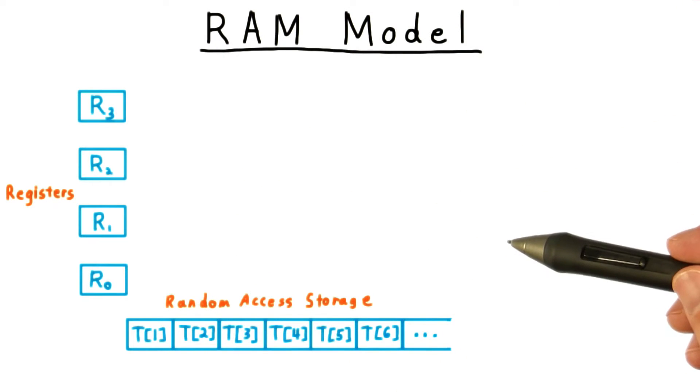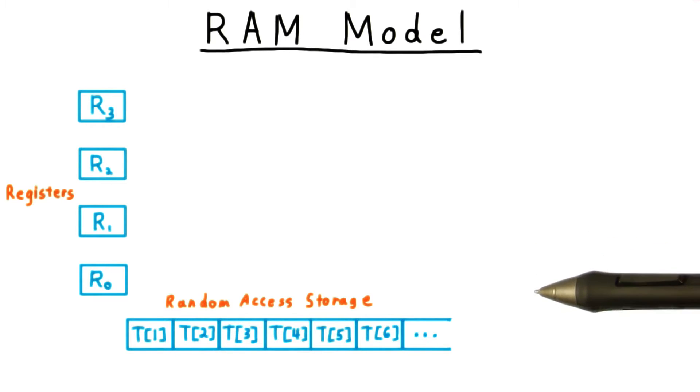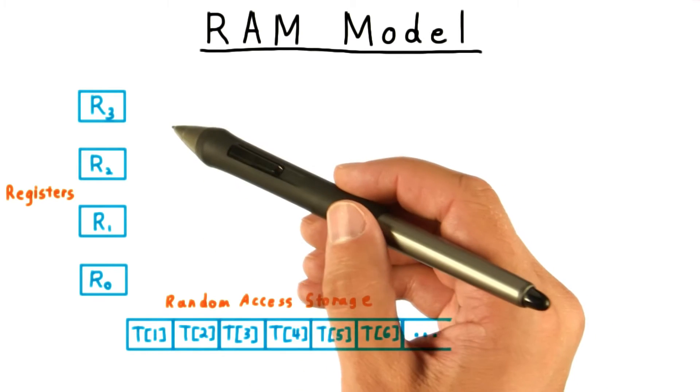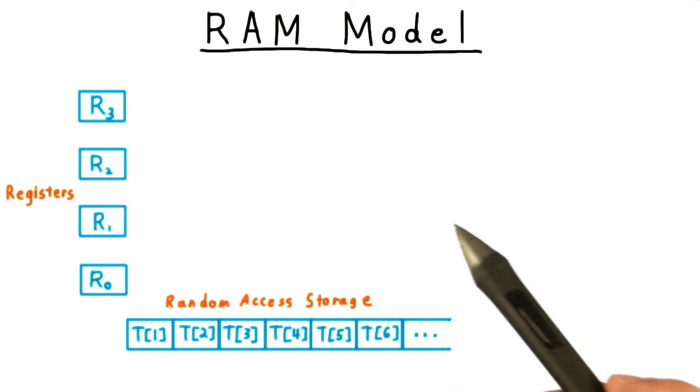Here is a representation of the RAM model. Instead of operating with a finite alphabet like a Turing machine, the RAM model operates with non-negative integers, which can be arbitrarily large. It has registers, useful for storing operands for basic operations, and an infinite storage device analogous to the tape of a regular Turing machine. I'll call this memory for obvious reasons.